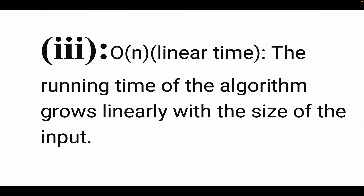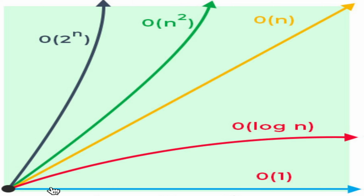The third one is linear time, represented by O(n). In this case, the running time of the algorithm grows linearly with the size of the input. As we can see in the graph, as the size of the input increases, the running time of the algorithm grows linearly.